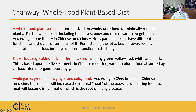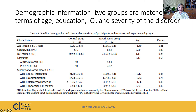They are also taught to follow a whole food, plant-based diet, eating a variety of vegetables in five different colors, and to avoid garlic, green onion, ginger, and spicy food. The two groups are matched in terms of age, education, IQ, and severity of their disorders.